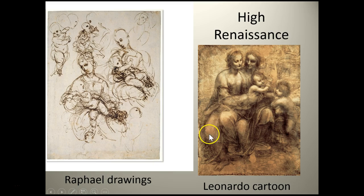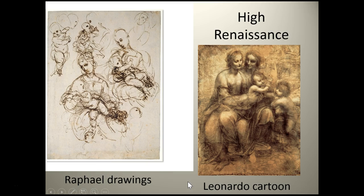To transfer the sketch onto the intended surface, artists would poke small holes and blow chalk through them to transfer the image. If you said Raphael you are correct. When we compare Raphael's drawing to Leonardo's, we see that he has a much more linear style. Leonardo's style is more characteristic of a technique called Sfumato, where he had these very velvety, shadowy edges that looked very smoke-like, with no definite linear composition.